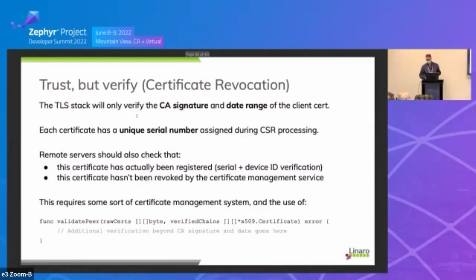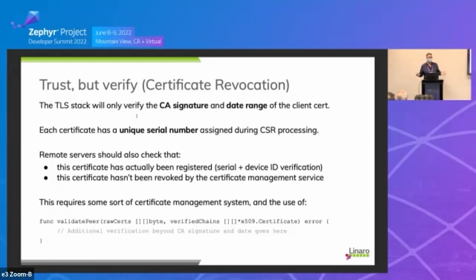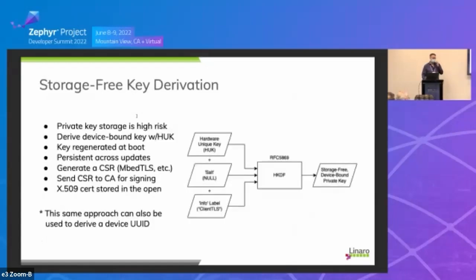None of this is a real-world example — you're going to want to do additional verification beyond just the CA signature and date range. Usually, every certificate you generate necessarily has a unique serial number. When I get a request on my server, I take that serial number, go to my CA, and ask: is this serial number valid? Has this been revoked? There's more work required here, but generally that will depend on the constraints of your specific implementation.